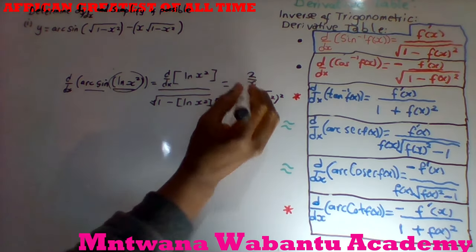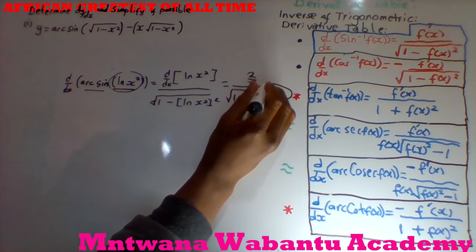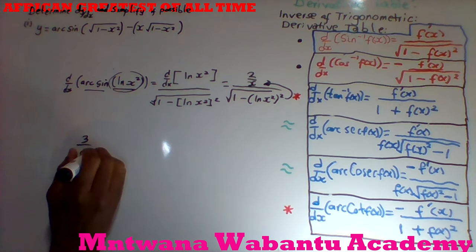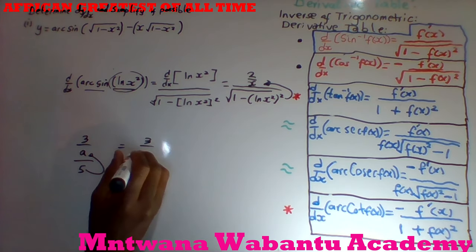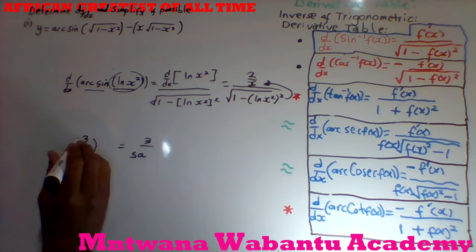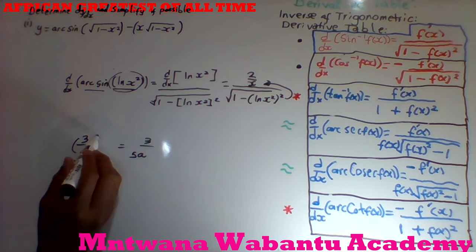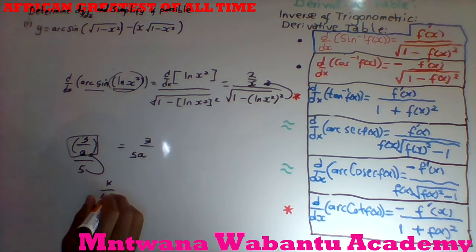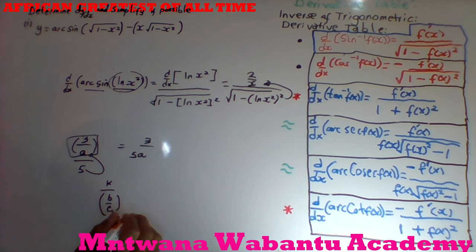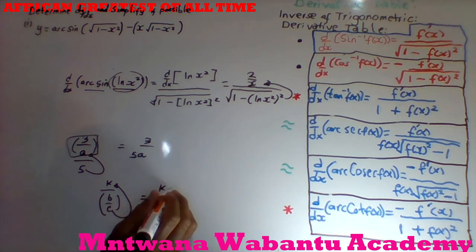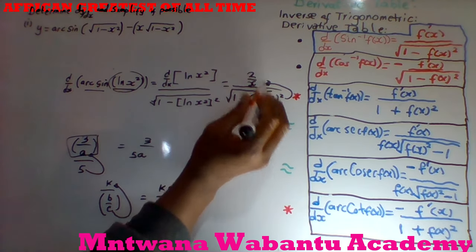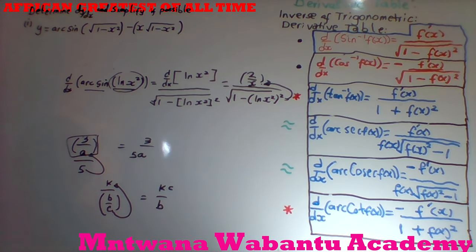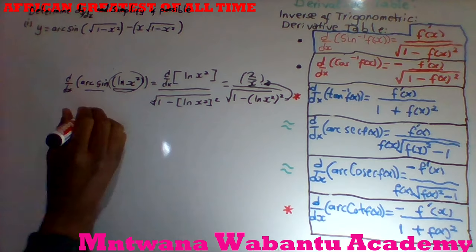Whenever you have a fraction over a number, let's say (3/8) divided by 5, you always take this to the denominator: 3 over 8 times 5. That's only when you have a fraction over a number. But if you have a number over a fraction — say k over (b/c) — the fraction's denominator goes to the top, so it becomes kc over b. In our case we have a fraction over a group of numbers, so all that group goes to the denominator.